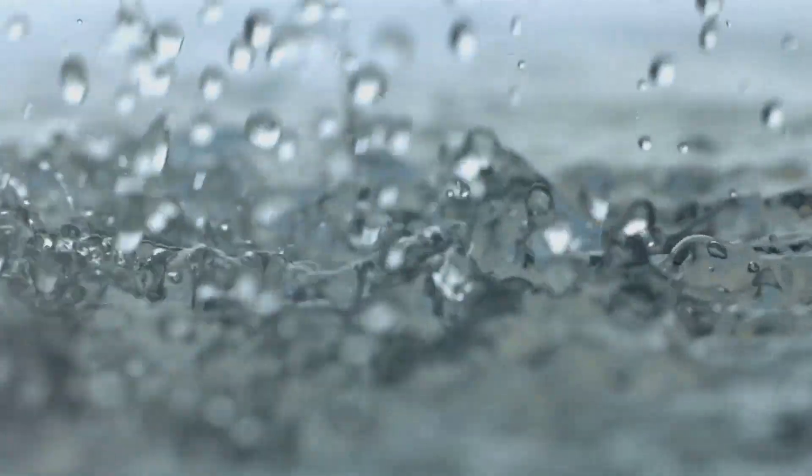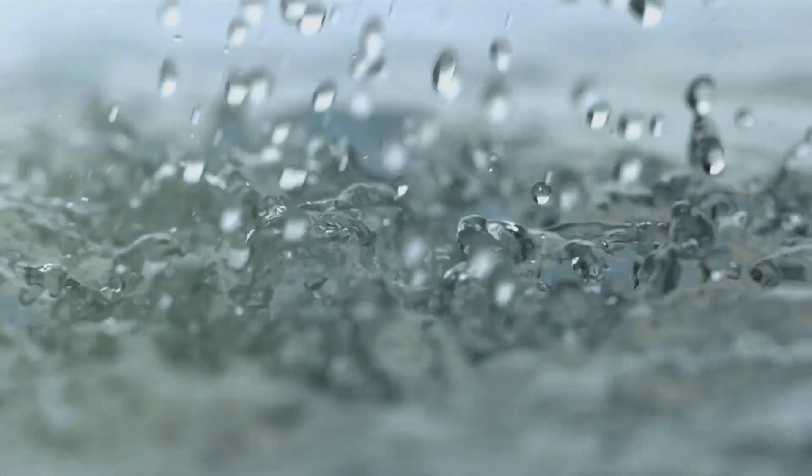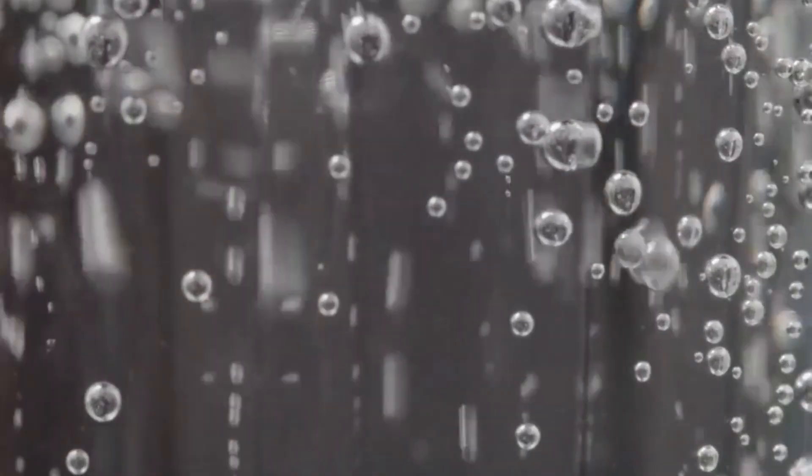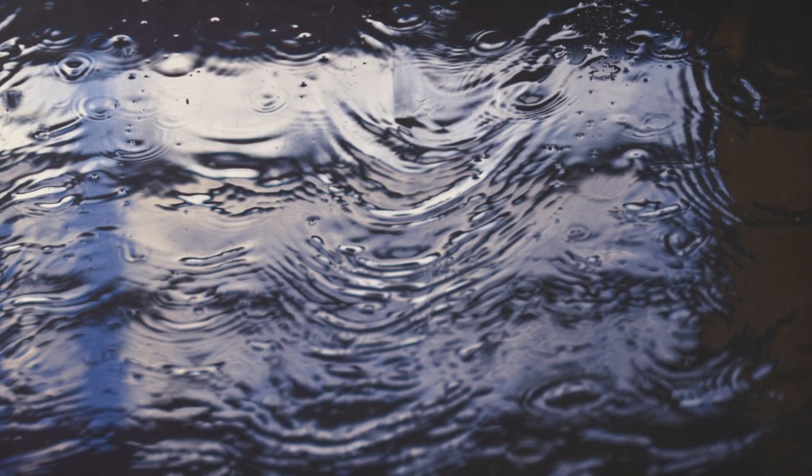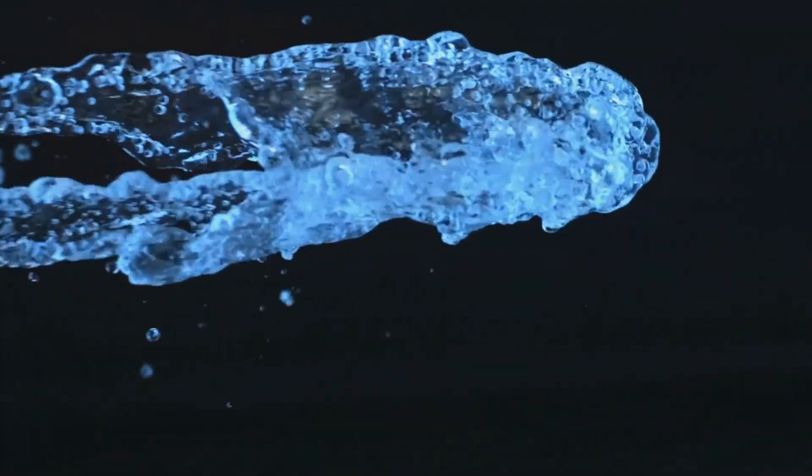The Weber number is a powerful tool that helps us understand and predict how fluids behave in various situations. By considering the balance between inertial and surface tension forces, we can explain why some droplets splash, others spread, and some bubbles pop while others float. It's a key concept in fluid dynamics, with applications ranging from everyday life to cutting-edge technologies.